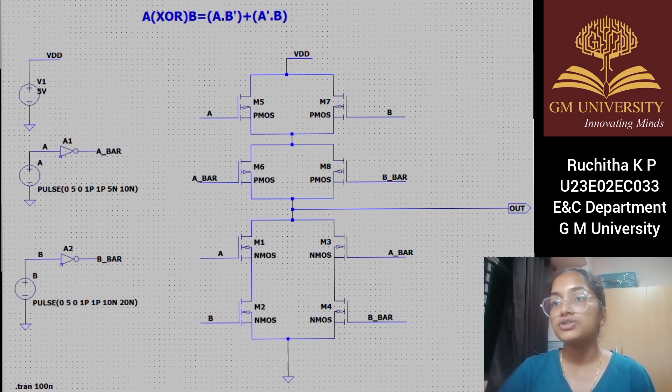When A equals to B, none of the paths complete from VDD to output or from output to ground. Output is either floating or weakly pulled to logic low. Effectively, the output is 0.